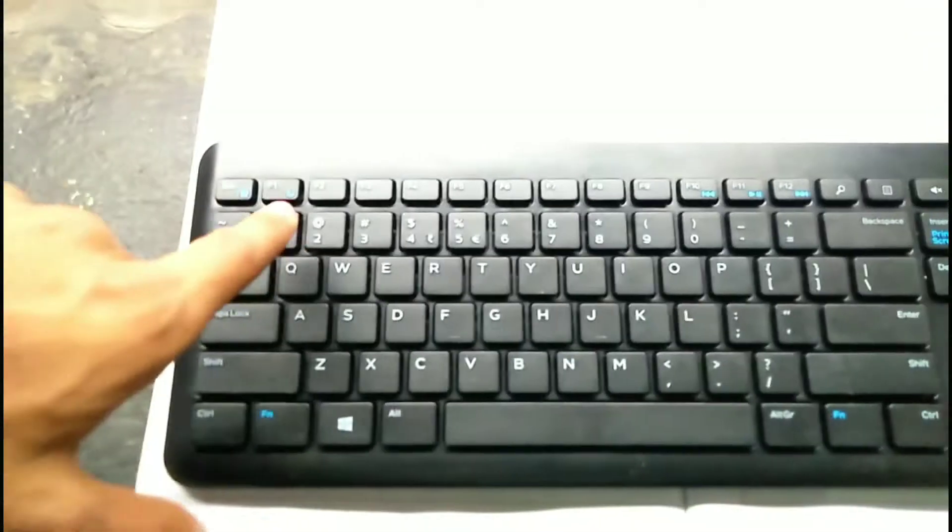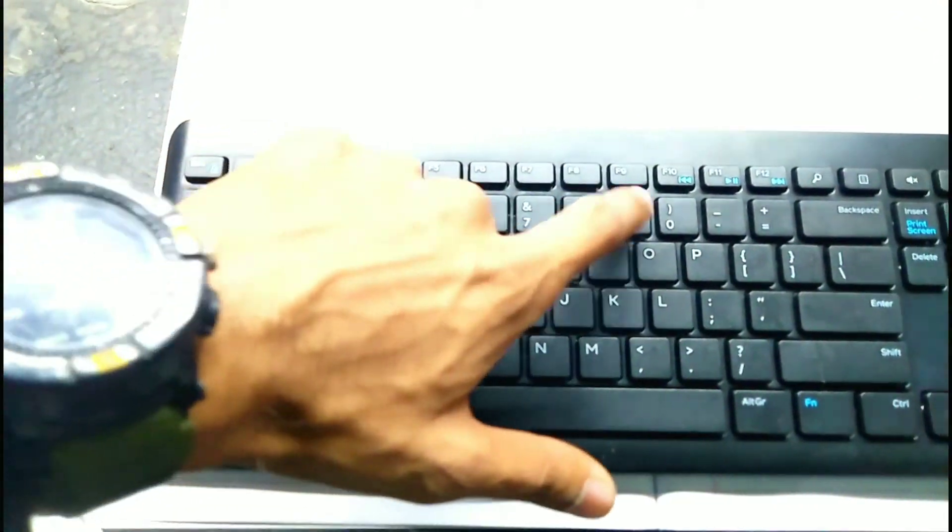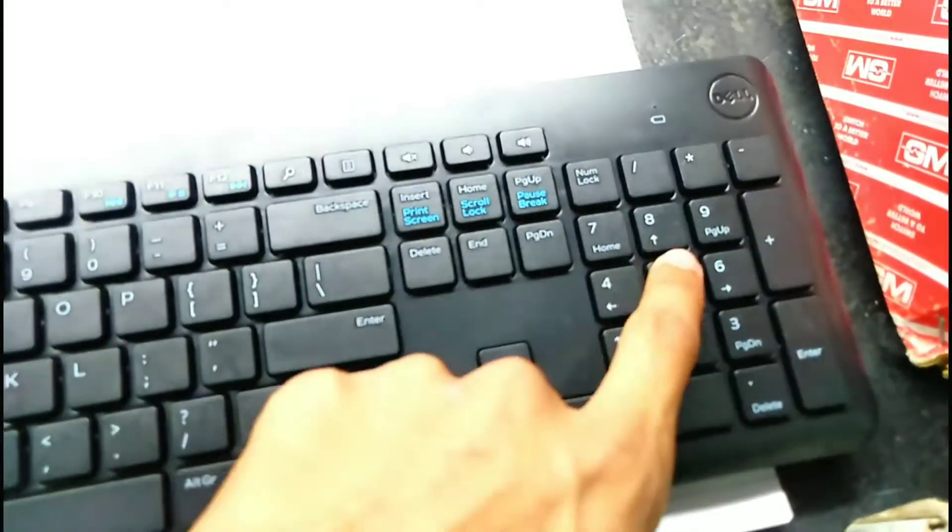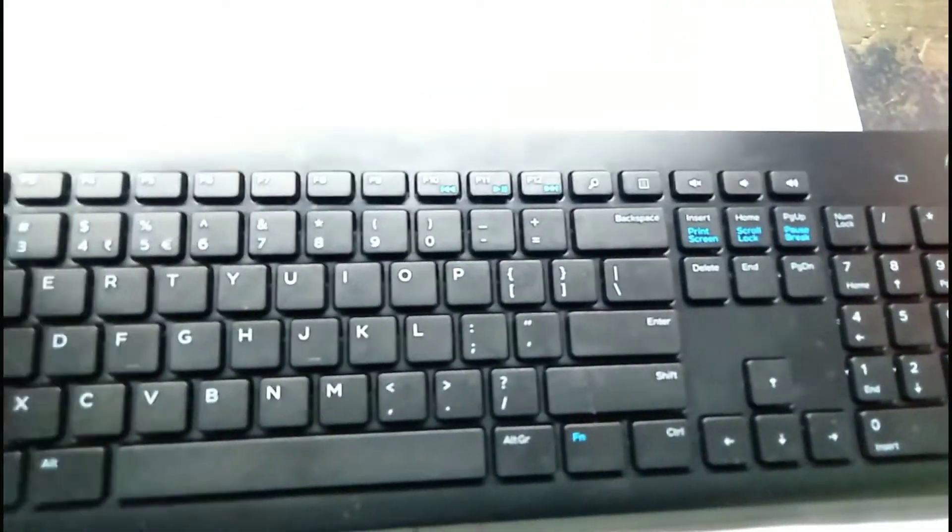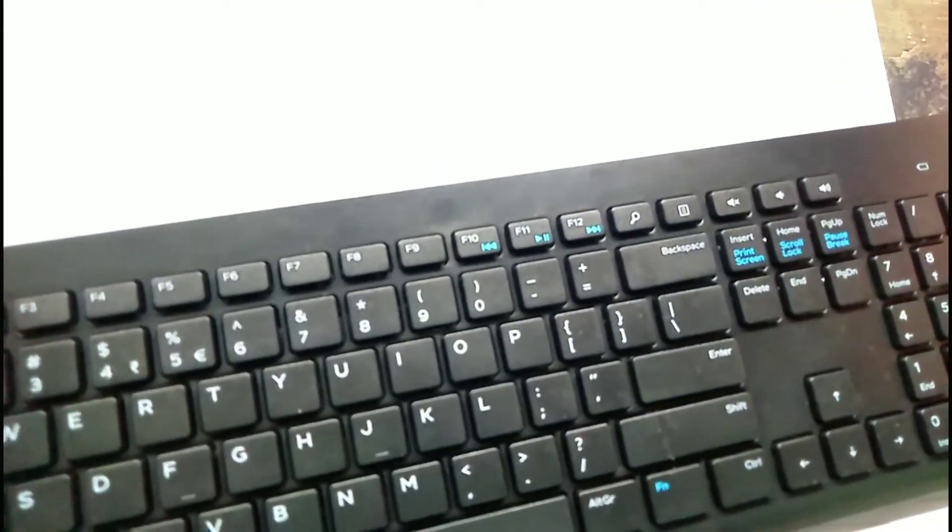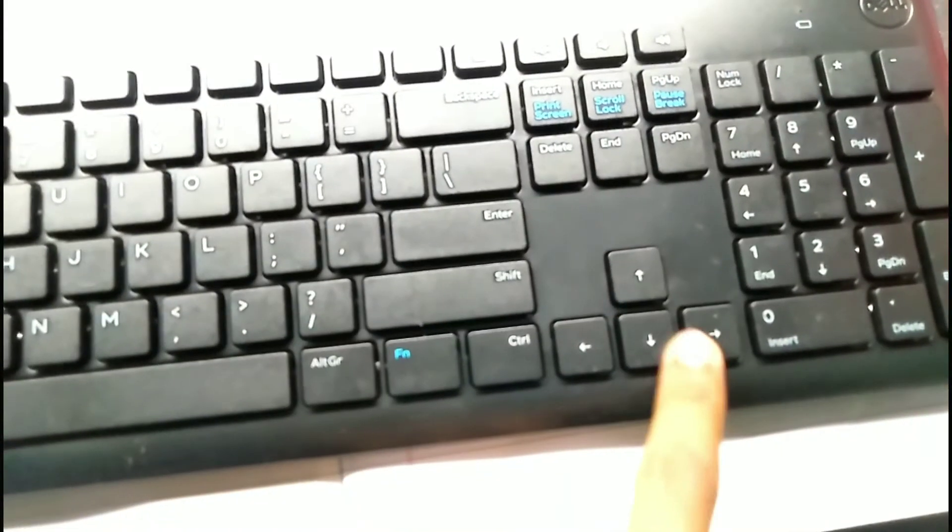And next number keys. Number keys on the top and on the side. Number keys: one two three four five six seven eight nine zero and one two three four five six seven eight nine zero. So these are all number keys.